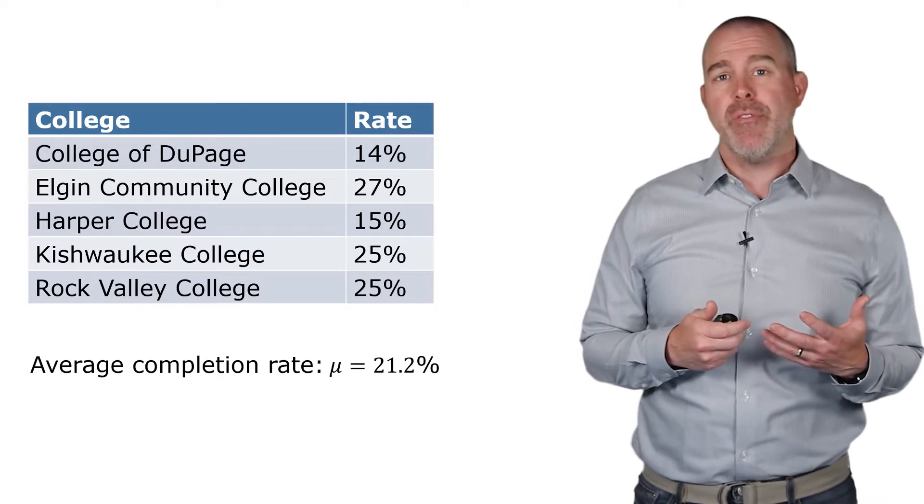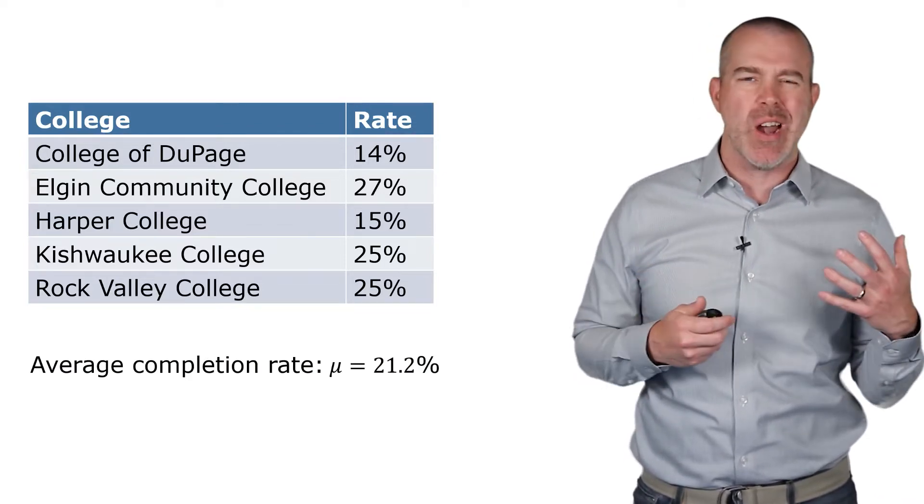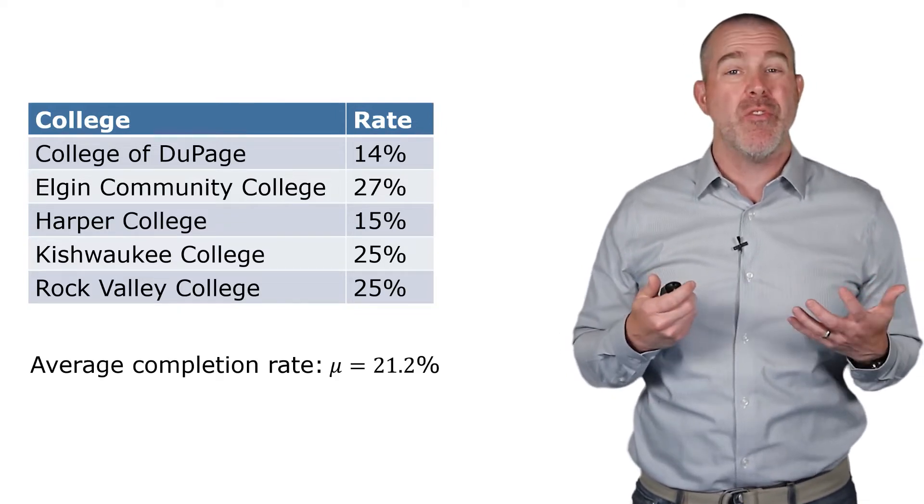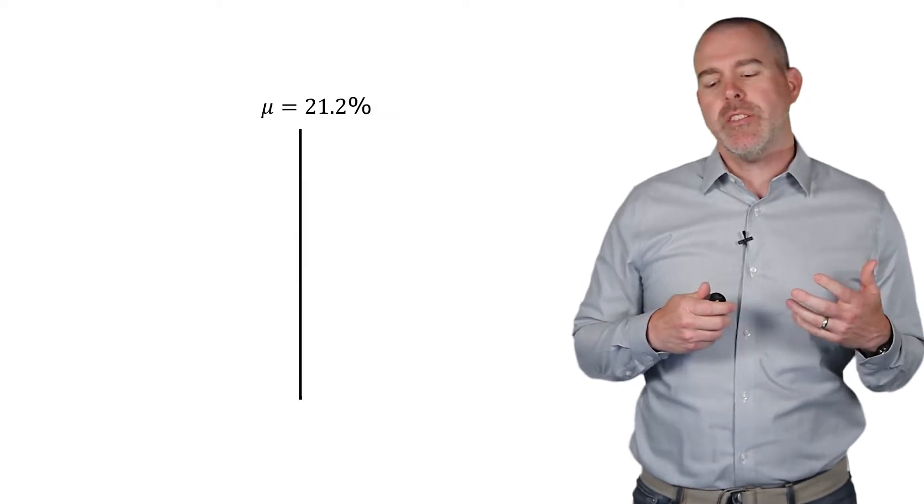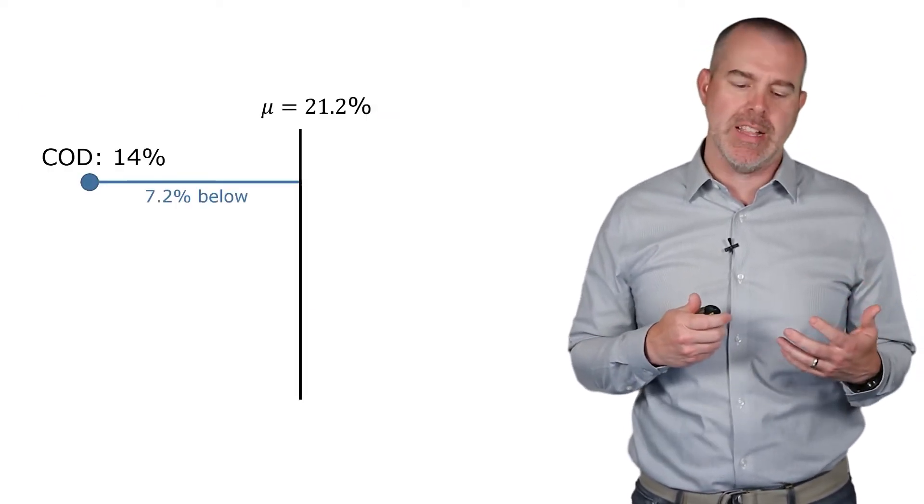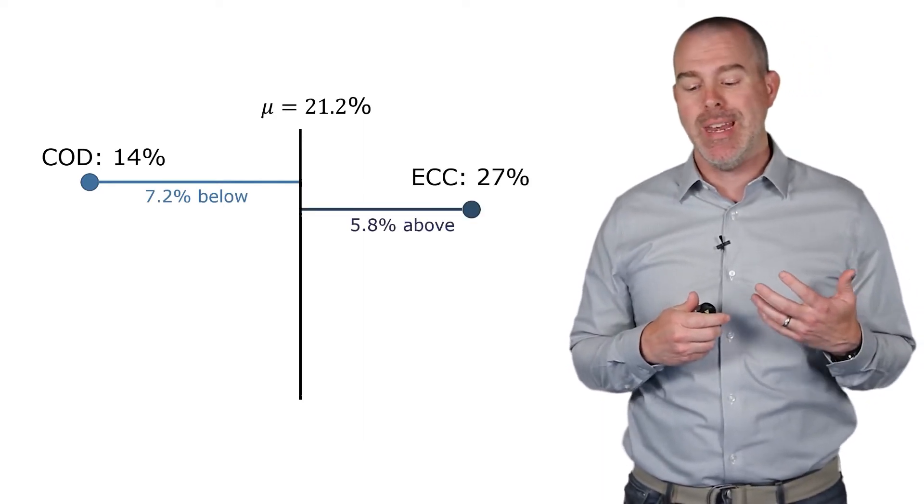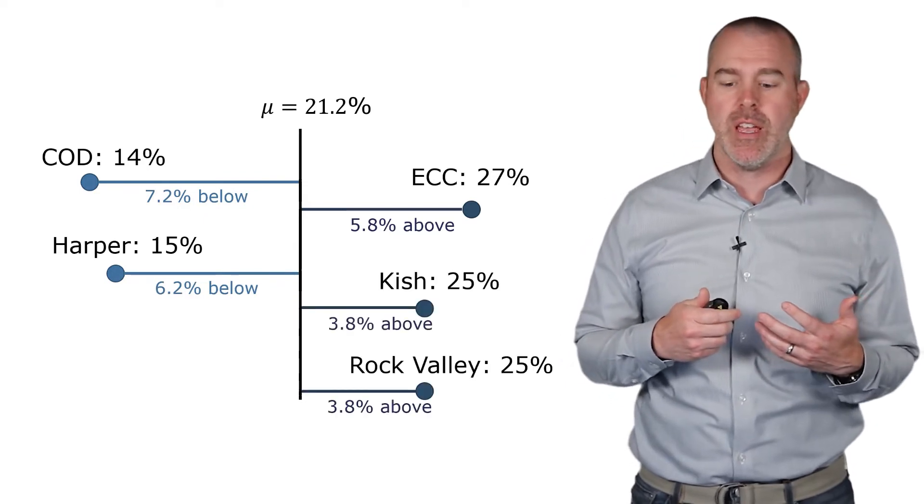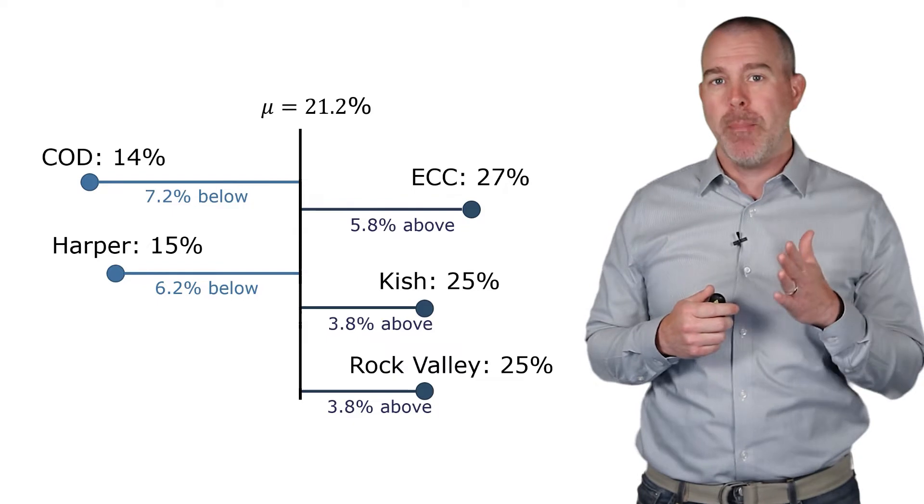So the average is 21.2. And what we'd like to get is some kind of measure for how far the typical observation is from that mean. So let's go ahead and put the mean right in the middle. We'll try to get a visual and we'll put the different community colleges up. So COD is about 7.2% below that mean. ECC 5.8% above, etc. Here's the other three. So we kind of have a visual of how far they are from the mean.